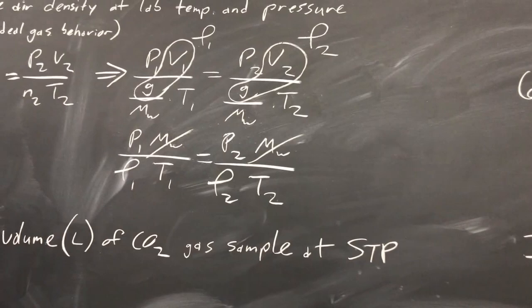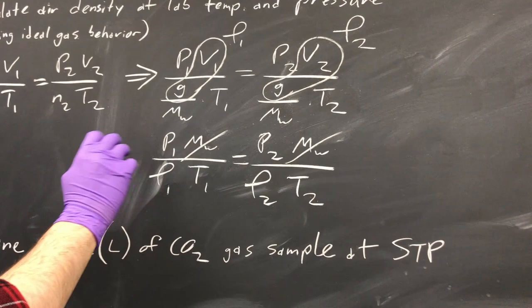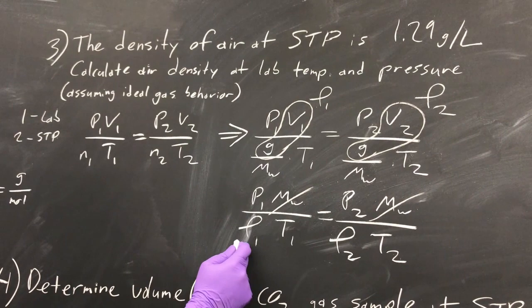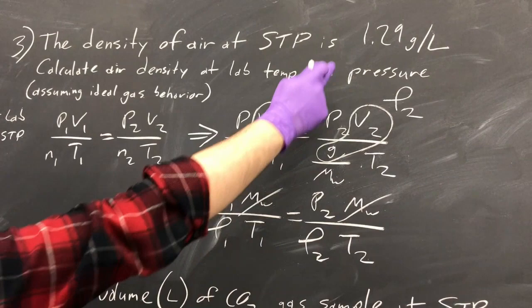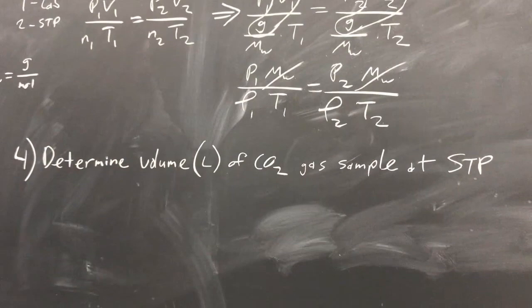And since the molecular weight of CO2 is the same, these cross out, and so you'll be using this identity to figure out the air density at lab temperature and pressure. So you'll be finding this using the density of air, 1.29 grams per liter at STP.